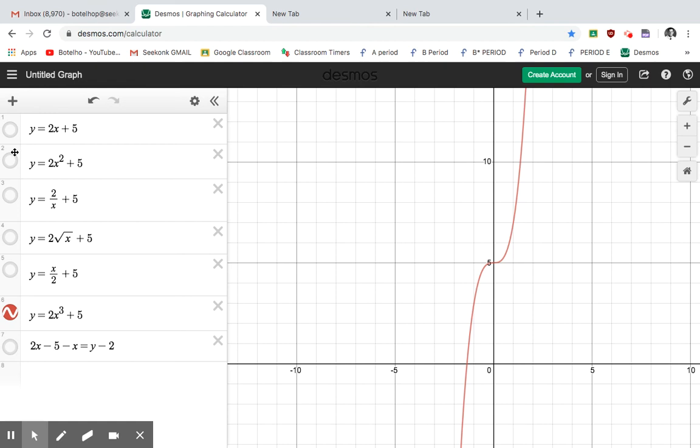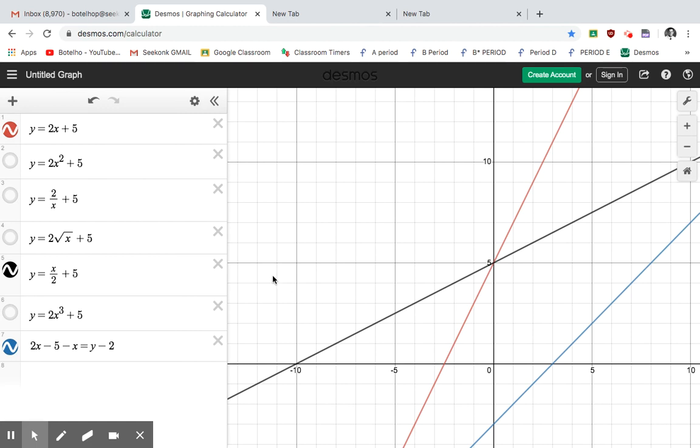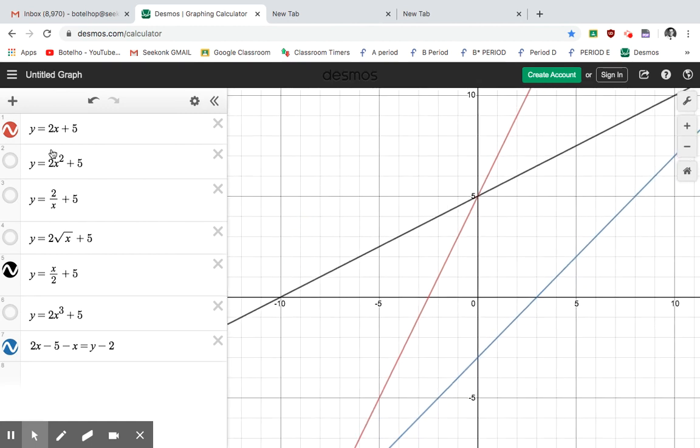So again, the ones that are linear are this one, turn that one off, that's linear. X in the numerator, that's linear. And even though this looks weird, it also gives you straight lines.